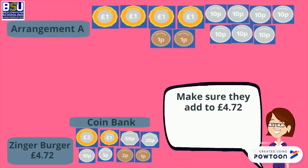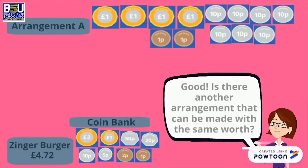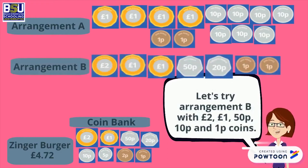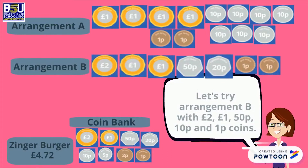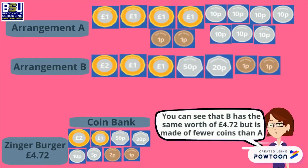Good. Is there another arrangement that can be paid with fewer coins? Let's try arrangement B, with two 1-pound coins, one 50-pence, two 20-pence, and two 2-pence coins. Arrangement B is made of fewer coins than A.